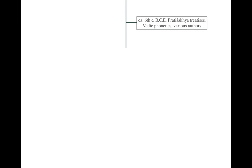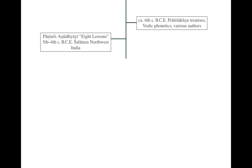When it comes to the predecessors of the Kaccayana — those grammars that provided materials from which the Kaccayana was built — the earliest extant materials are called the Pratisakhya treatises. They deal with Vedic phonetics, mostly the pronunciation and recitation of Vedic texts, and were composed roughly around the 6th century BCE. Some may have earlier materials, or are actually later, but we find these materials in the Kaccayana too.